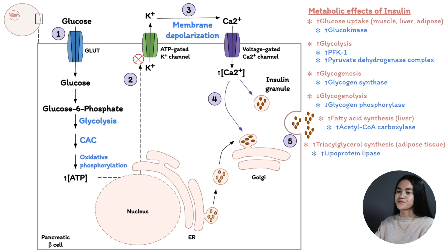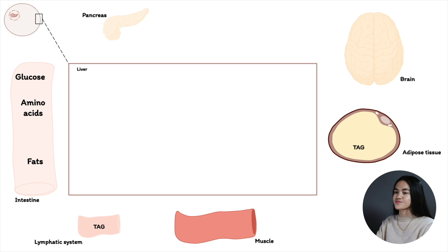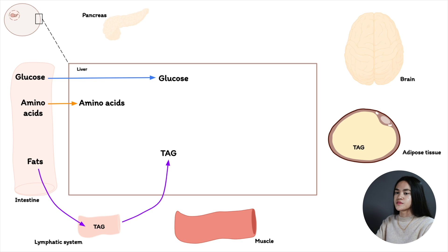To summarize: insulin triggers glucose uptake, and excess glucose is converted to glycogen storage in liver and muscle, and to triacylglycerols in adipose tissue. In the well-fed state, after a meal, glucose, amino acids, and fats enter the liver. Insulin is secreted by the pancreas and triggers glucose uptake by the tissues.